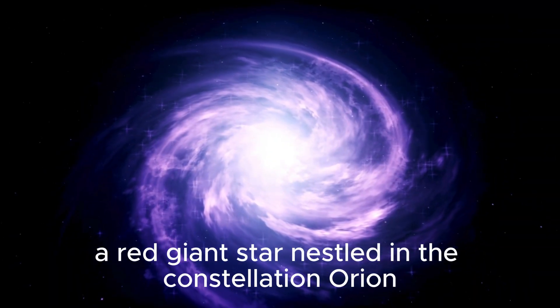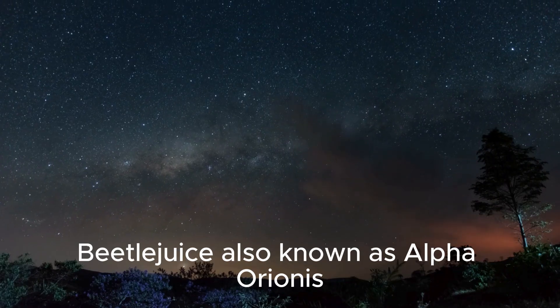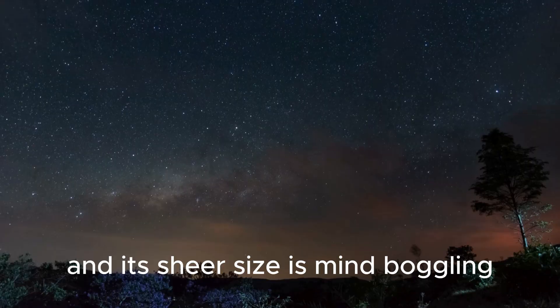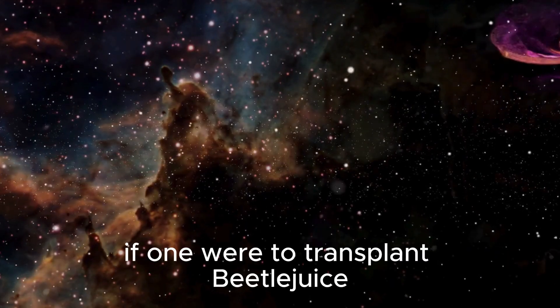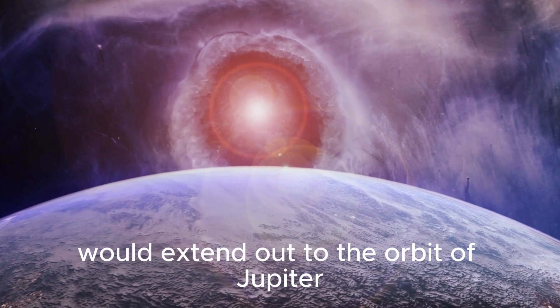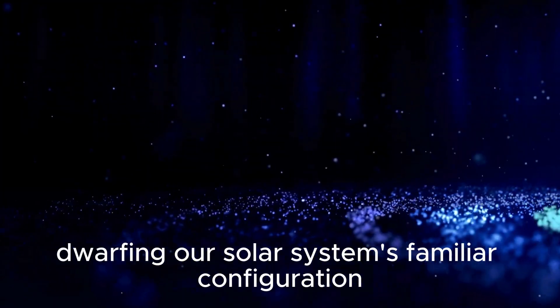A red giant star nestled in the constellation Orion, Betelgeuse, also known as Alpha Orionis, is a red supergiant star, and its sheer size is mind-boggling. If one were to transplant Betelgeuse into the position of our sun, its expansive reach would extend out to the orbit of Jupiter, dwarfing our solar system's familiar configuration.